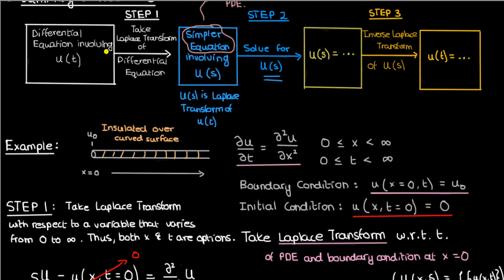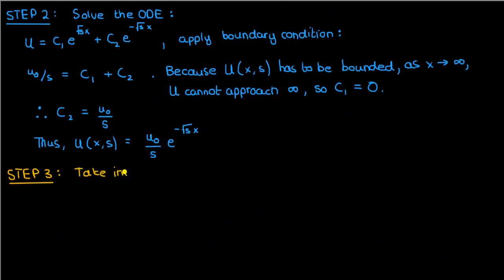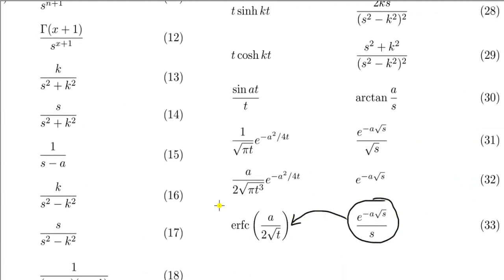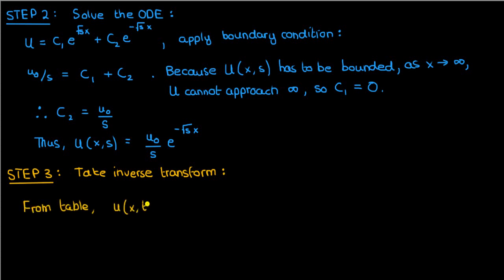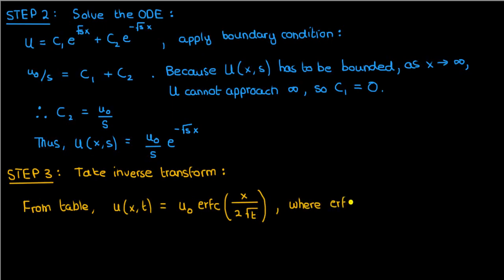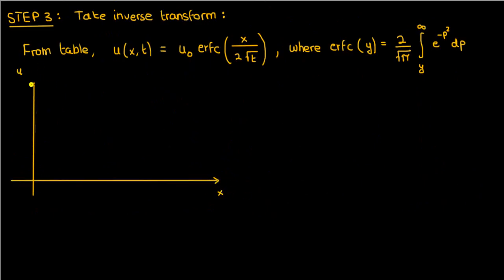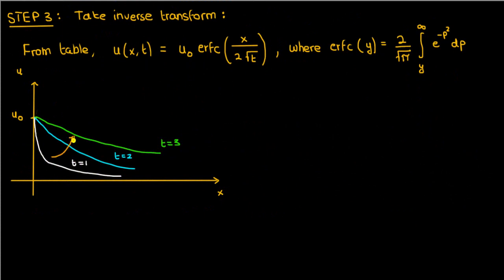The only thing left is to take the inverse transform of capital U to get the actual solution u of x comma t. This expression isn't too complicated, and using a Laplace transform table we find that u(x, t) equals U₀ times the complementary error function of x over 2√t. The complementary error function is a special function defined by an integral with dummy variable p. Plotting the solution, the temperature profile at a given time shows that as time increases, the profile for positive x shifts upward — physically, heat travels from x equals 0 into the rest of the rod, warming it up.